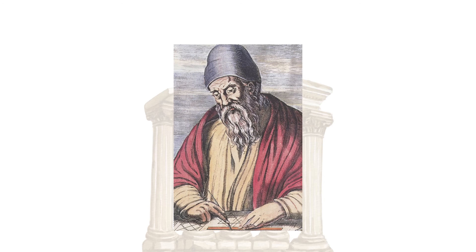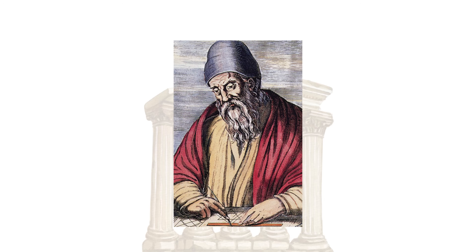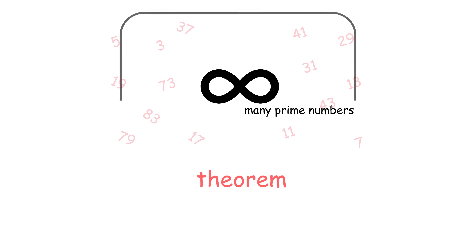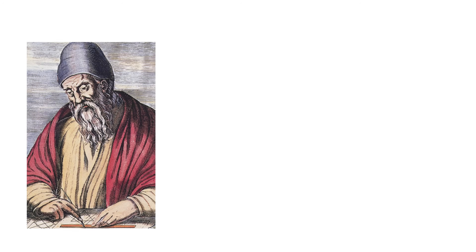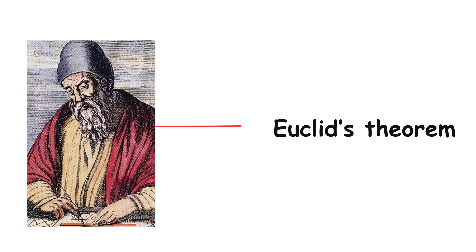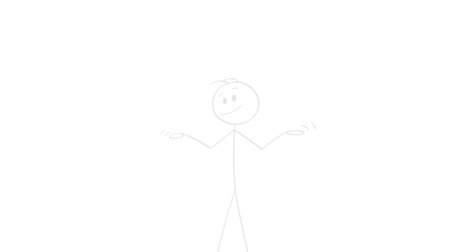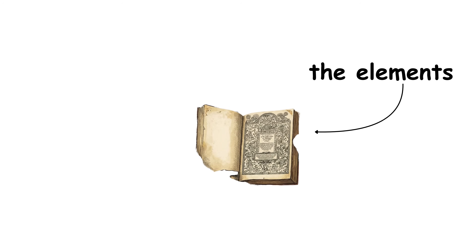This was something that the ancient Greek mathematician Euclid wanted to know, and eventually he found the answer. There are infinitely many prime numbers. This is a theorem, a mathematical statement that can be proven to be true. In honor of the person who proved it, this theorem is called Euclid's theorem. Let's now look at a condensed version of Euclid's proof, taken from The Elements, a mathematical work written by Euclid.